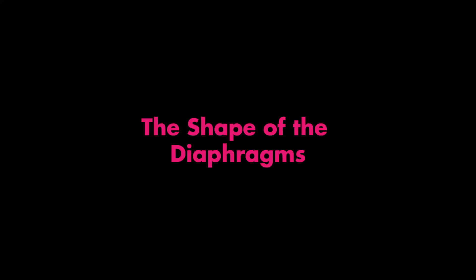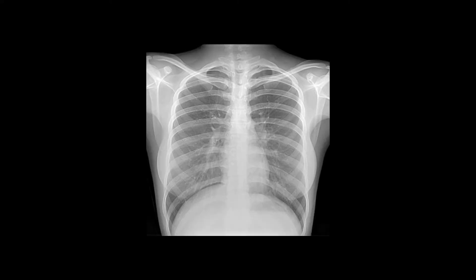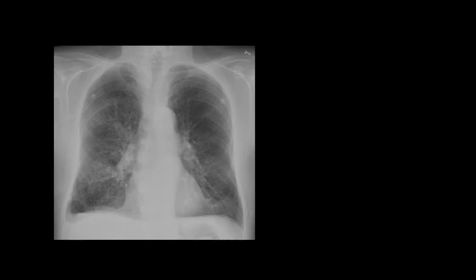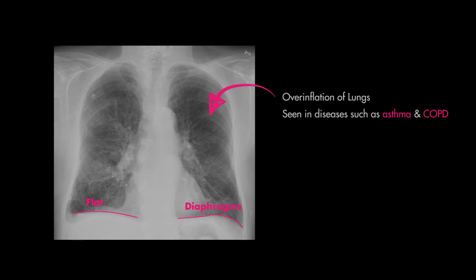When assessing the shape, each hemidiaphragm usually has a curved shape like you see here. However, they may be flat, as in the case of patients with COPD or patients with very severe asthma, which are both obstructive lung diseases leading to overinflation.